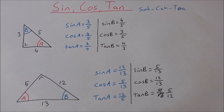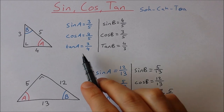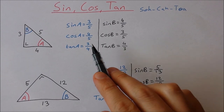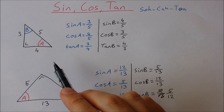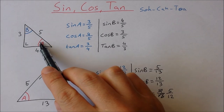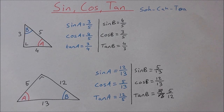In the next video I'm going to take a look at how we use these ratios — the sine, cos and tan — to actually find out or calculate the size of unknown angles. I'll show you that in the next video. Thanks for watching. If you have any questions, please ask in the comments below, and I'll see you next time.